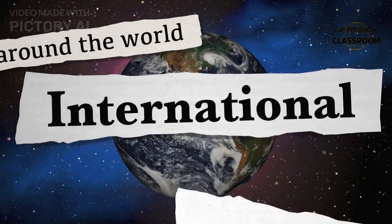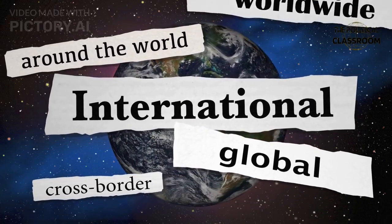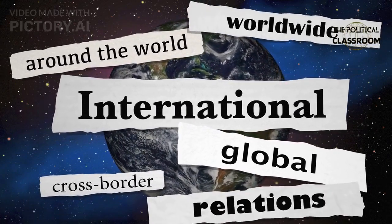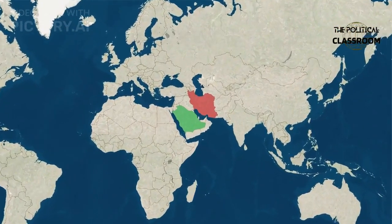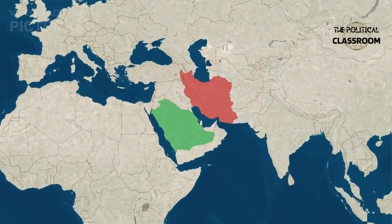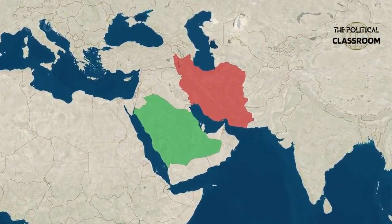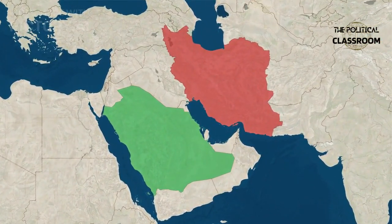Realism and real politic are evident in various historical events and contemporary affairs. For example, the geopolitical conflicts in the Middle East, such as the rivalry between Iran and Saudi Arabia, can be understood through the realist lens.